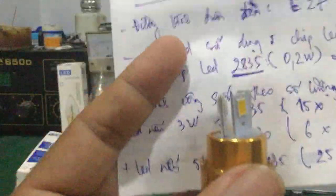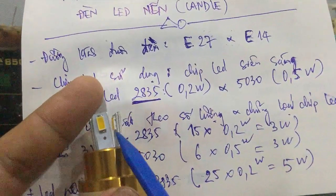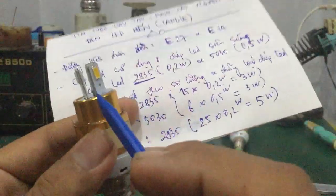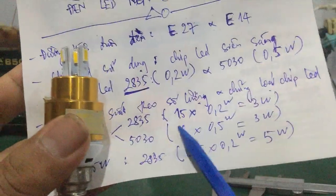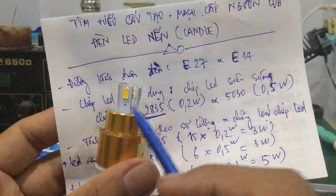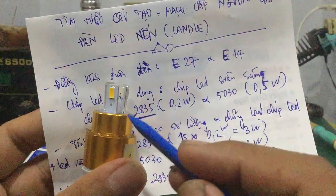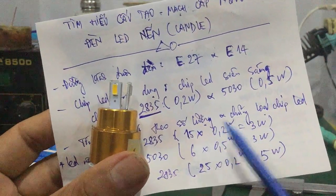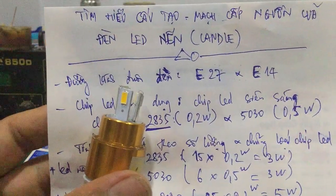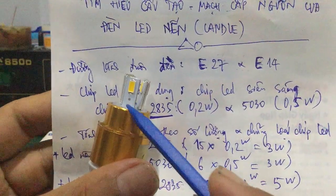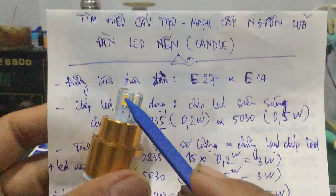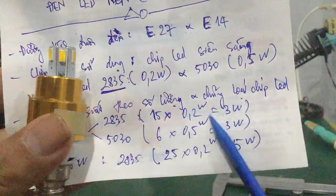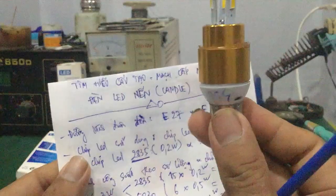Còn đối với đèn LED nến dùng chip LED 5030: ở đây có 3 con LED ở ngoài và 3 con LED ở trong, tổng số là 6 con LED. Các bạn lấy 6 nhân với 0,5W — chip LED 5030 ở đây người ta sản xuất khoảng 0,5W. Cái chip LED 5030 có nhiều loại công suất: 0,2W, 0,5W, 1W; ở đây dùng 0,5W. Nhân 6 × 0,5W ra công suất khoảng 3W.